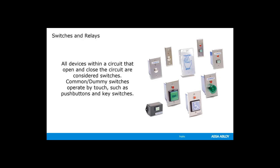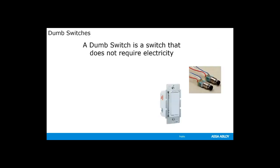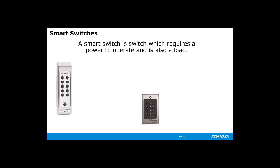All devices within a circuit that open or close are considered switches. Common or dumb switches are operated by touch, such as push button or key switches. A dumb switch does not require any electricity to operate. Here are a few different dumb switches: a standard door position switch, a toggle switch, a couple of light switches, and a few push button switches. A smart switch is a switch that requires power to operate and is also a load within the circuit. Devices such as keypads, timers, card readers, lighted push buttons, motion sensors, and touch sense bars are smart switches. These switches draw current to operate and may also consume power when activated. All these requirements must be taken into consideration when determining the total amperage required for a complete circuit.